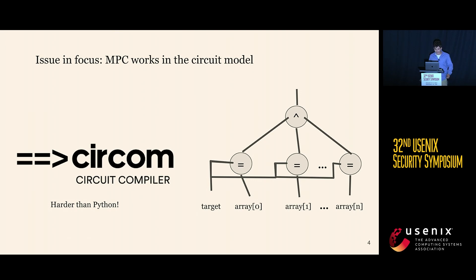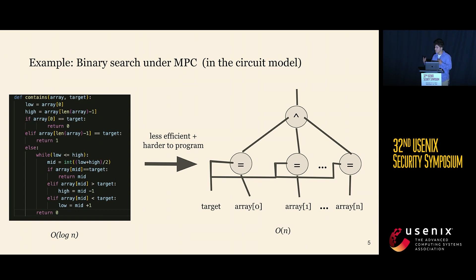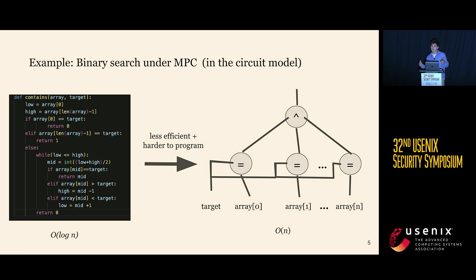There are many issues that prevent MPC from gaining mass deployment, but the central one we'll focus on today is that MPC works in the circuit model of computation. If you've written CIRCOM, you know it's a lot harder than writing Python, and some computations don't fit nicely in the circuit model. For example, a simple contains function on a sorted array takes log operations in the random access model, but linear operations in the circuit model — making certain feasible computations completely infeasible.